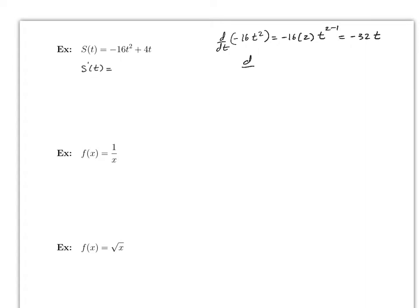For the derivative with respect to t of t, notice that the value of n is 1, so this will be 1 times t to the 1 minus 1. Anything to the 0 power equals 1, so this is just 1. Therefore the derivative of this term is plus 4 times 1, which is 4. So the derivative is minus 32t plus 4.